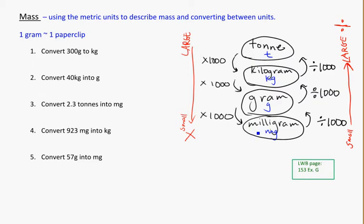There are 1,000 milligrams in one gram, 1,000 grams in one kilogram, and 1,000 kilograms in one ton. Between each of these units, there's a factor of 1,000. If I have 1,000 milligrams, I'll have one gram. If I have 1,000 grams, I'll have one kilogram. And if I have 1,000 kilograms, I'll have one ton.